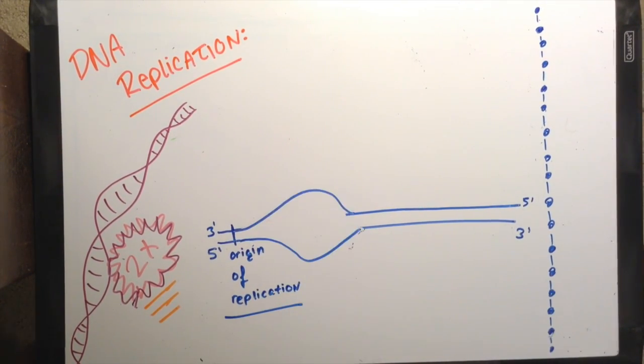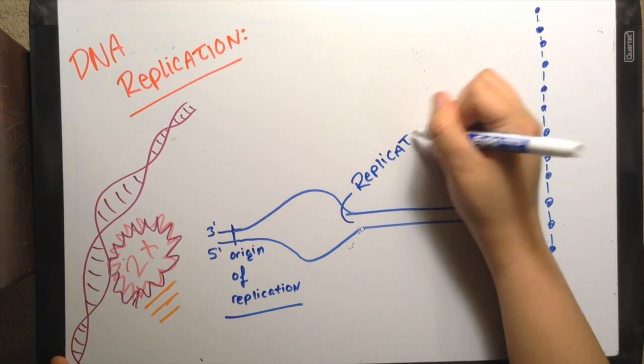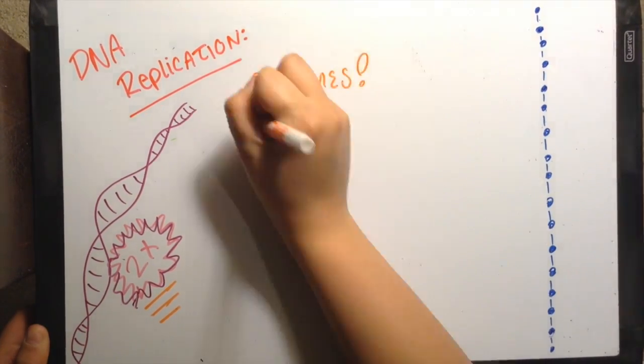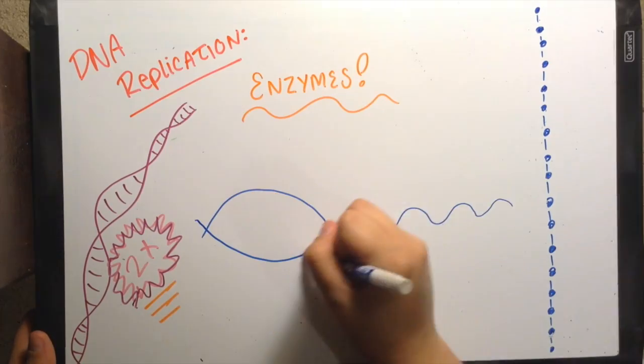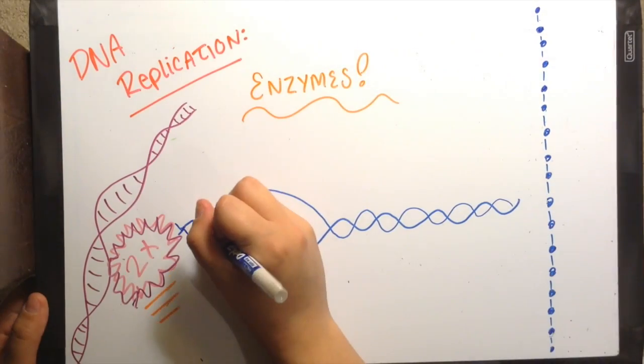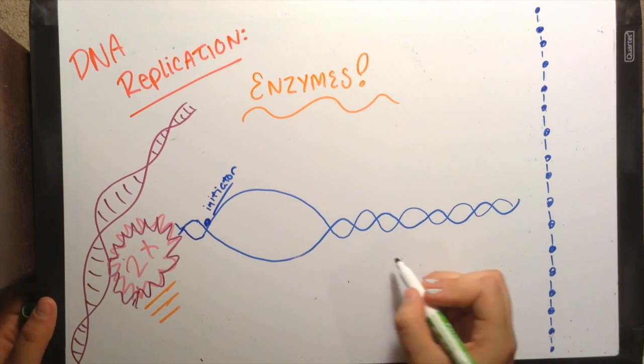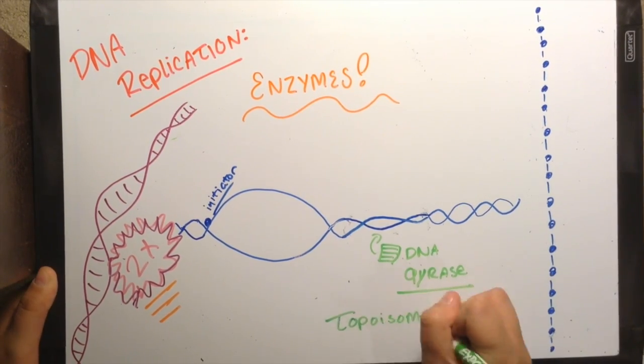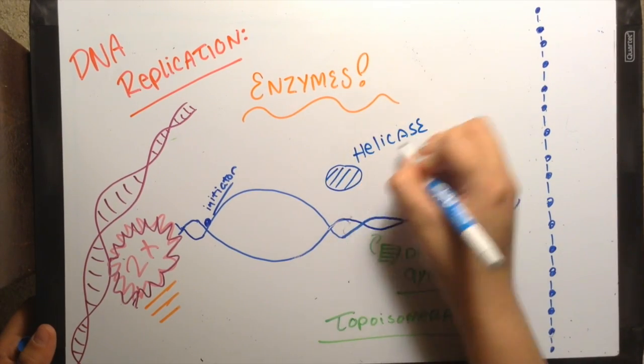It starts at the origin of replication and continues on from there. The area being separated and replicated is called the replication fork. Replication itself occurs because of the work of many enzymes. As the strands separate due to the initiator protein, DNA gyrase makes sure that the DNA that is not yet replicated does not supercoil.